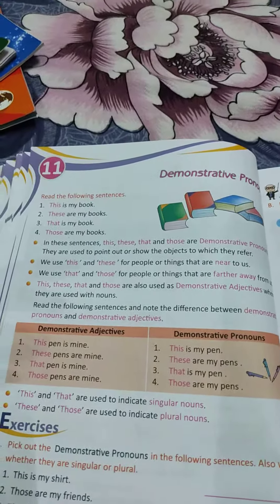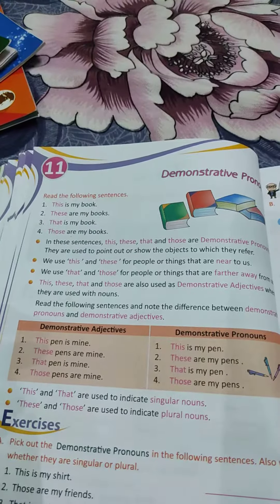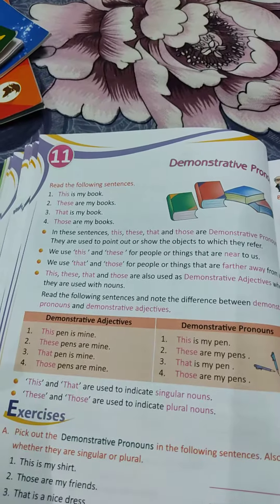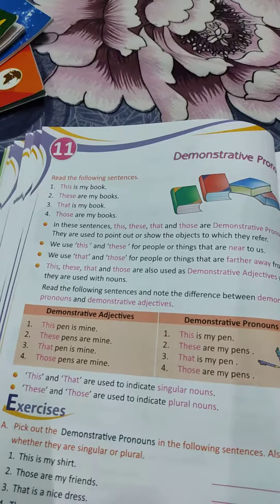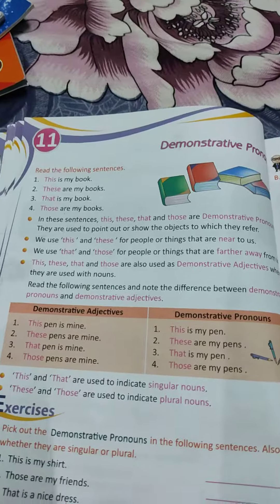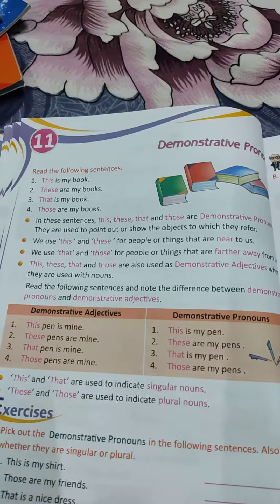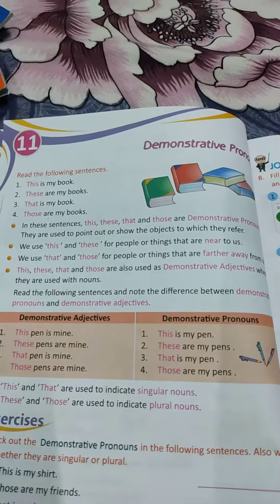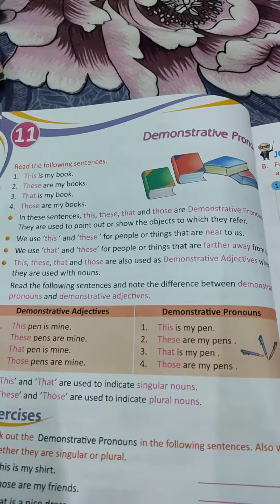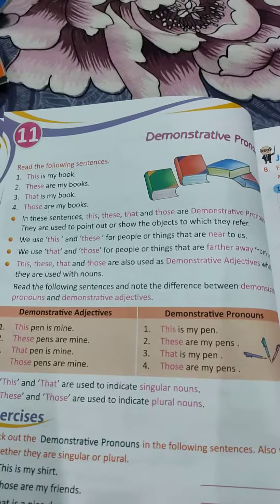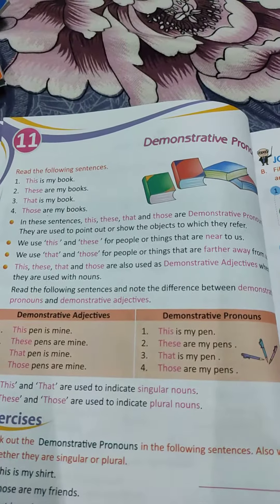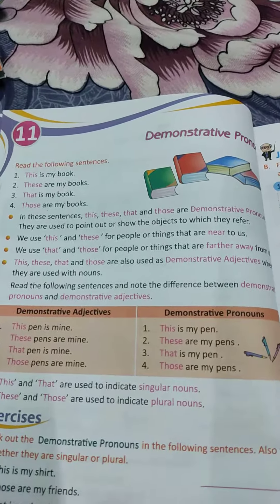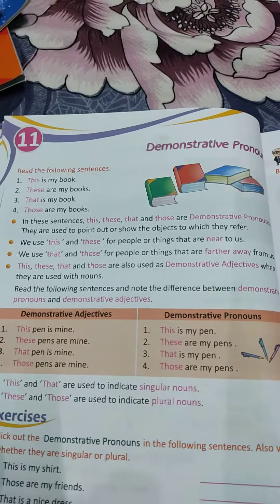So, what is the difference between a demonstrative adjective and a demonstrative pronoun? These are used to point out and show the object which they refer to. If this, that, these, those are referred to as the demonstrative pronoun, then it shows the object which they refer to. When they are used as the demonstrative adjective, then they have to be used with the nouns.